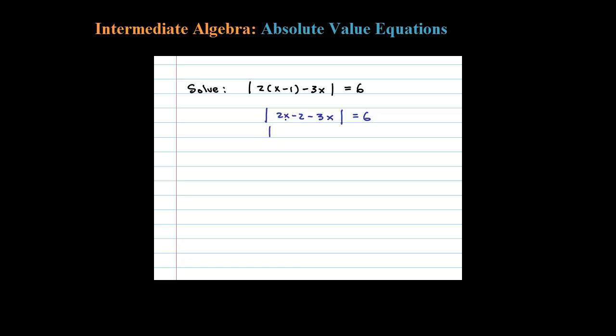Now we have 2x and negative 3x, which add to be negative x minus 2 in absolute value equals 6. So the argument of the absolute value, negative x minus 2, could equal negative 6, in which case the absolute value of negative 6 is 6.